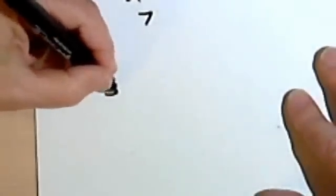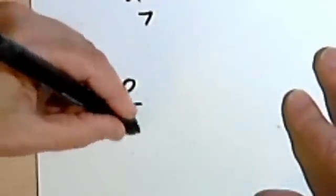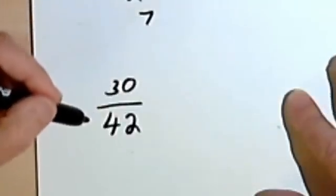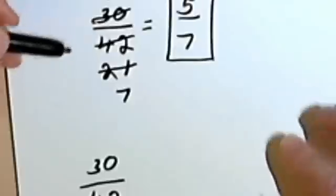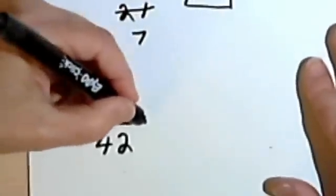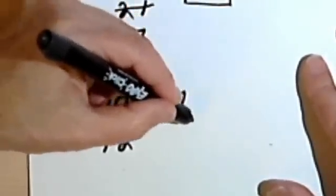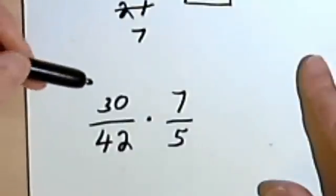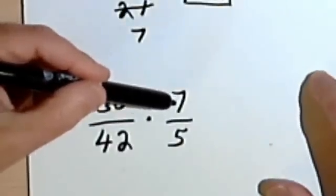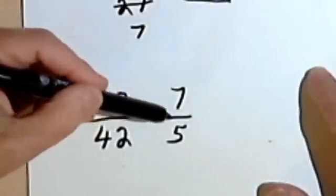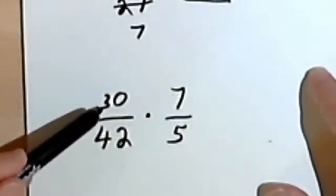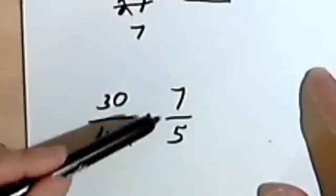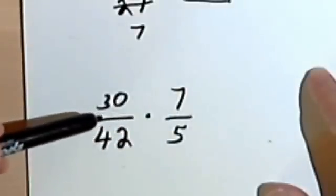Now, I said we could check these. So let's go back and look at the original example. Well, it was 30 over 42. Now, if we take the answer that we had, which was 5 sevenths, and write its reciprocal. A reciprocal, by the way, is nothing more than a fraction turned upside down, inverted. So 5 sevenths becomes 7 fifths. Well, if we take the original problem and multiply it by the reciprocal of the answer, we should get 1.